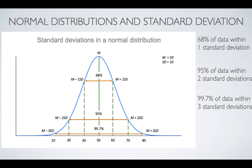Here is what a normal distribution looks like with the standard deviation shown. The M in the middle is showing you where the mean is. On the normal curve, 68% of the data is within one standard deviation of the mean. 95% of the data is within two standard deviations, and 99.7% of the data is within three standard deviations. Then you have your tails, which are usually your outliers.